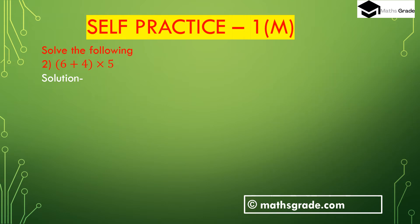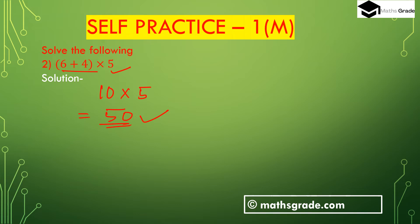Now question number 2: (6 plus 4) is inside the bracket, then multiply by 5. First we have to find the calculation inside the bracket: 6 plus 4 is 10. Then 10 multiplied with 5 is 50. Our answer is 50. So (6 plus 4) multiplied with 5 is 50.